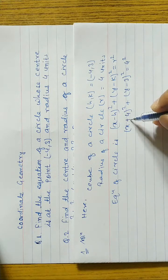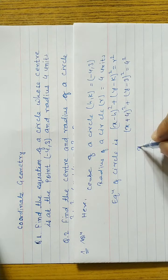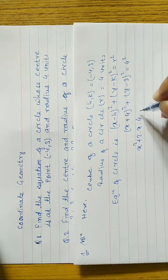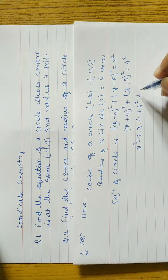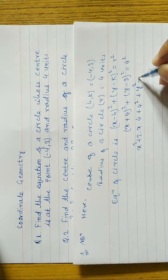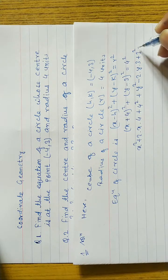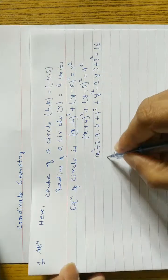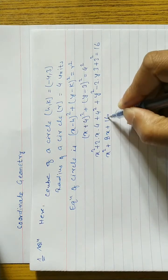Now we have to use the (a + b)² and (a - b)² formulas. Let's expand: x² + 2 × x × 4 + 4² plus, and here also use the (a - b)² formula. That gives us: x² + 8x + 16 after calculation.